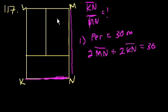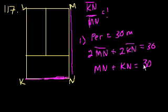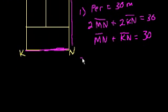You get MN plus KN is equal to 30. And actually, you still can't figure out the ratio between the two. You just know that the sum of the two are equal to 30. Let's look at statement 2. You can't figure out the ratio from this.